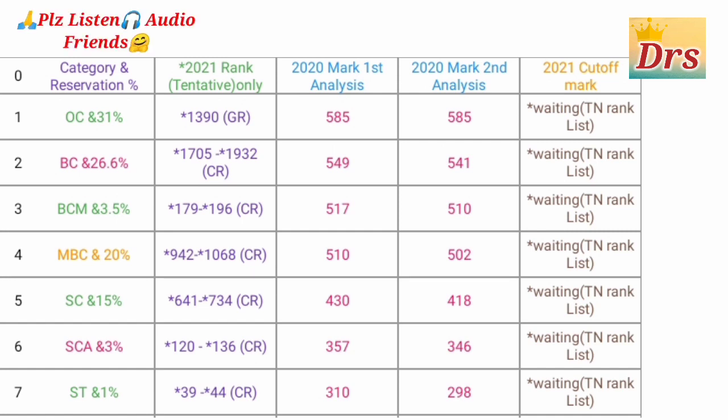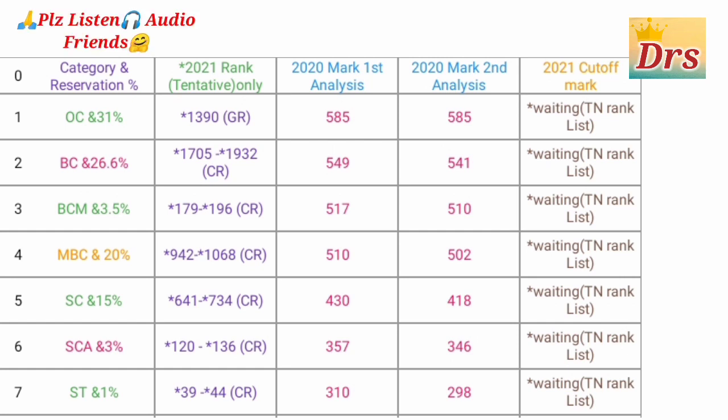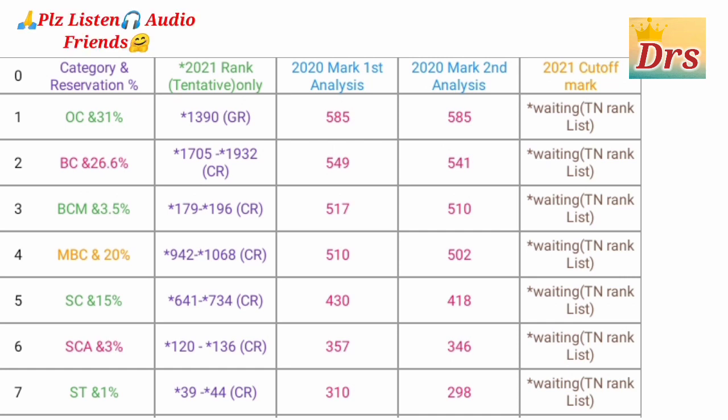The first box is the category — how much percentage is reserved. The second box is the range, the range of community rank. The OC category is the gender rank; the remaining one is the community rank. This is the second box.